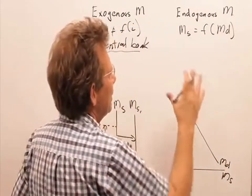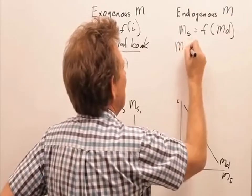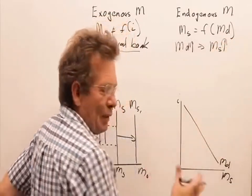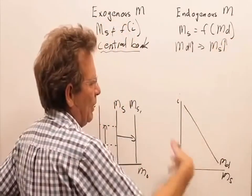In other words, what we are saying is if the money demand increases in the economy, that will lead to an increase in the money supply. So there is no independent money supply curve here.